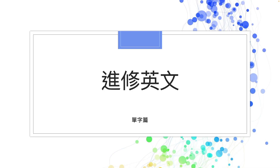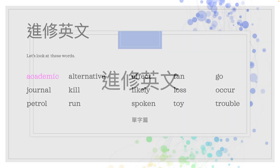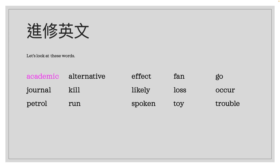欢迎来到进修英文单字篇第十单元。本单元总共有十五个字，是属于欧洲语言能力分析架构 CEFR Level A2 and B1 的程度。主要是用来帮你增加英语能力基础。我们现在就开始咯！Let's look at these words.